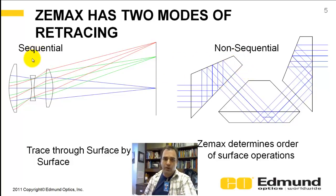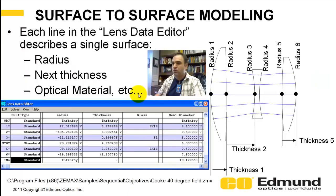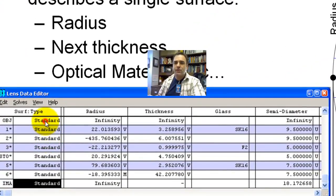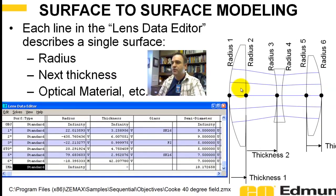Sequential is what we're going to be talking about primarily, and you tell it what surfaces to go through. How does that work? There's the Lens Data Editor, or the LDE. It's essentially a spreadsheet. The first column is what sort of surface type it is — this is a standard, just a simple radius. Then thickness, glass, and your diameter. Here's a Cooke triplet pulled from ZEMAX's samples.